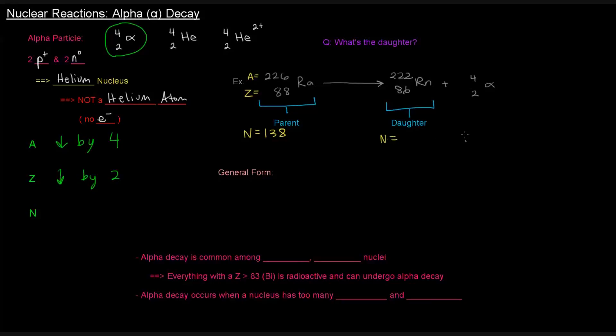Here, at the alpha particle, 4 minus 2, that's 2. 222 minus 86 is 136. So the number of neutrons went from 138 to 136, so it decreased by 2. It makes sense that Z being the number of protons and N being the number of neutrons, each of them decreases by 2 because the alpha particle is 2 protons and 2 neutrons, and they're leaving the parent nucleus to result in the daughter. The mass number is made up of the Z and the N, so it decreases by 4 because both of these decrease by 2 each.